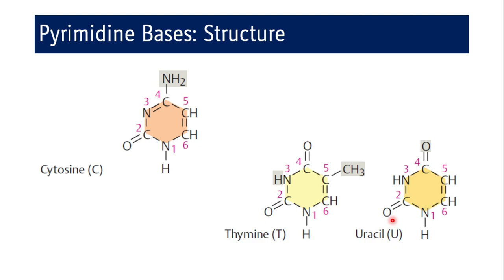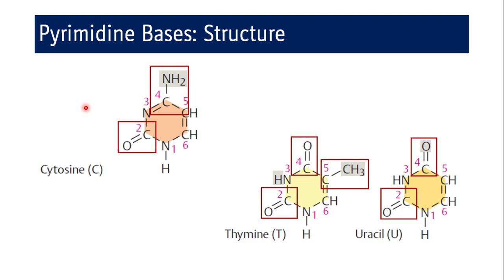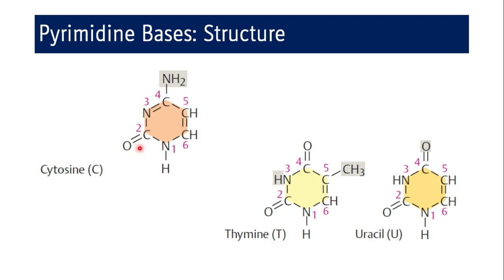Cytosine, thymine, and uracil are the pyrimidine bases. One by one we will see the chemical name and peculiar facts about their presence in DNA or RNA. All pyrimidine bases can exist in lactam form and lactim form — lactam means keto group and lactim means enol group. At physiological pH, the lactam or keto form will be predominant compared to the lactim or enol form. This is the most common structure of pyrimidine bases.